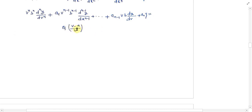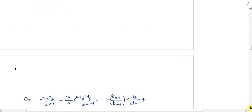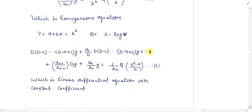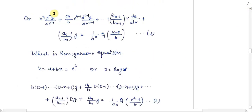Ab is equation mein b^n se divide kar dete hain, to equation ki form milti hai jisme v^n, v^(n-1) terms aate hain, aur a1/b, a_(n-1)/b^(n-1) ki values constants ho jaati hain kyunki b constant hai. To yani ab jo hamen equation mili hai wo homogeneous equation hai. Ab is equation ko solve karne ke liye, ya isko linear differential equation with constant coefficient mein change karne ke liye, v = (a + bx) = e^z lete hain.